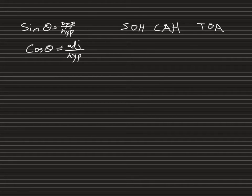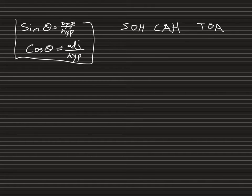We're going to use SOH-CAH-TOA, which you've probably covered before. Sine is opposite over hypotenuse, cosine is adjacent over hypotenuse, and tangent is opposite over adjacent. When we find the opposite and adjacent components, we're just going to use sine and cosine.